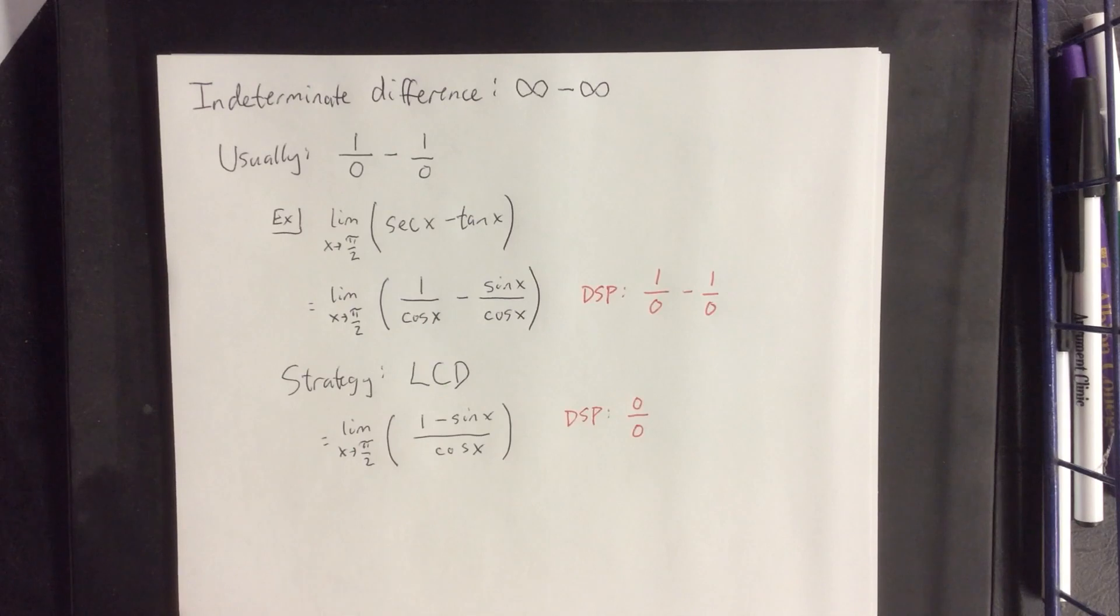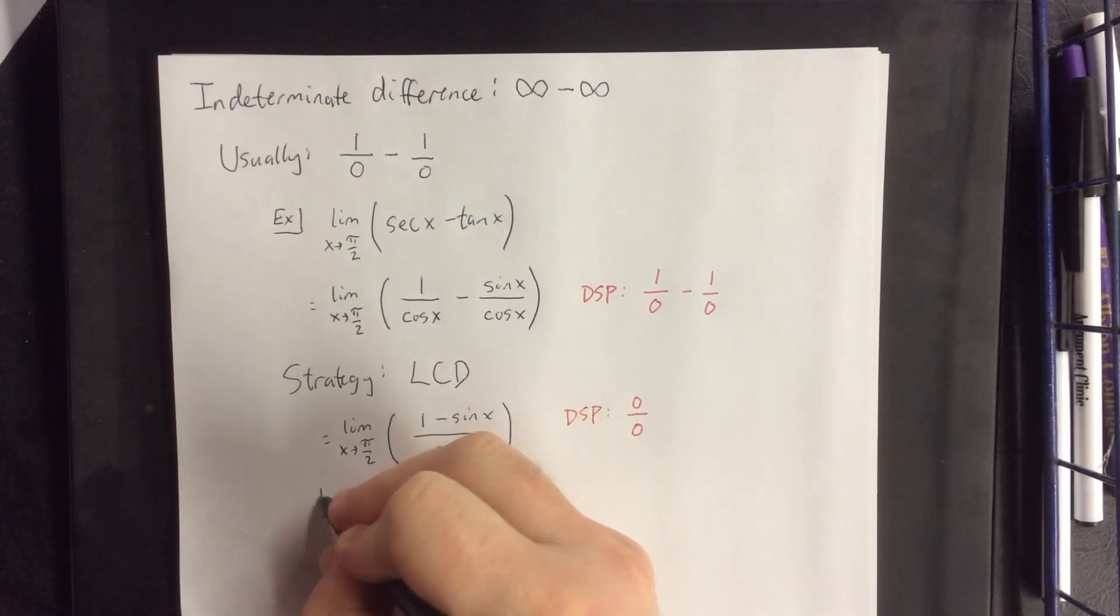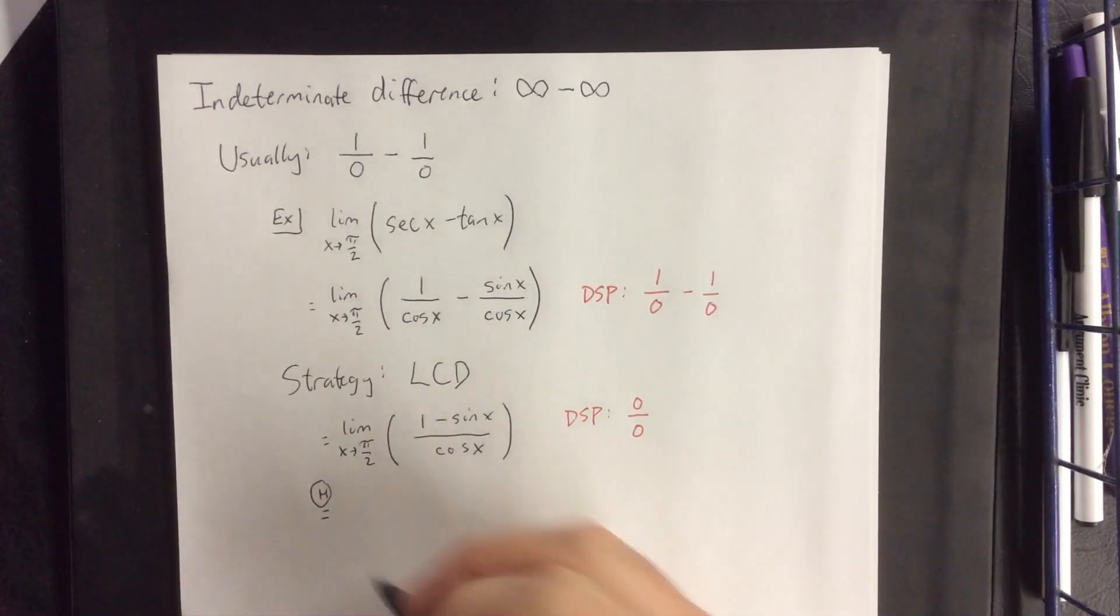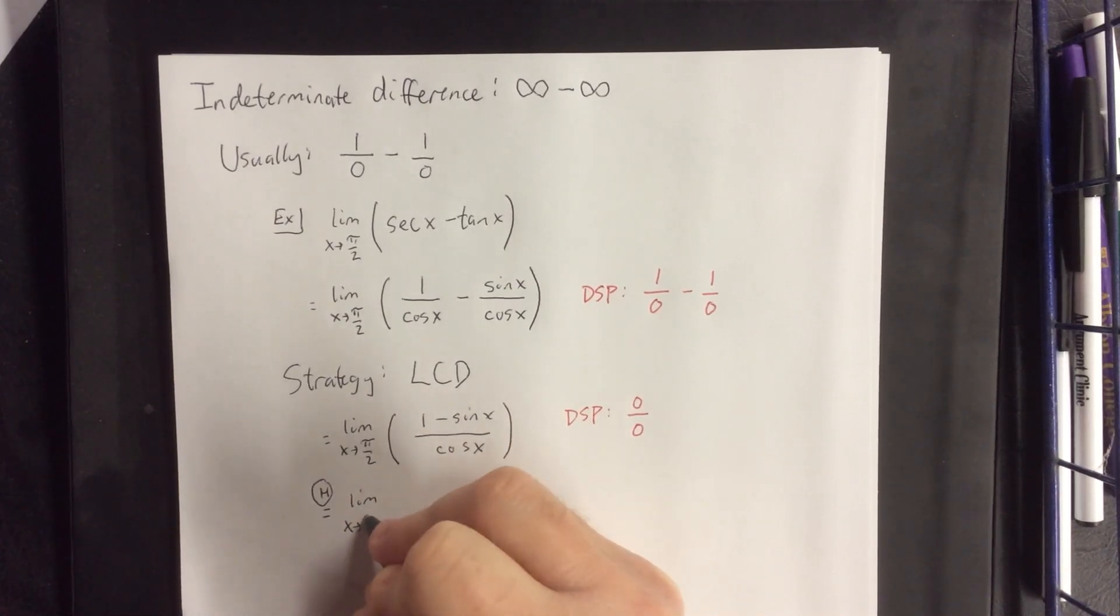Once in this form, you are allowed to use L'Hopital's rule, and using L'Hopital's rule would give you the following limit as x approaches pi over 2.